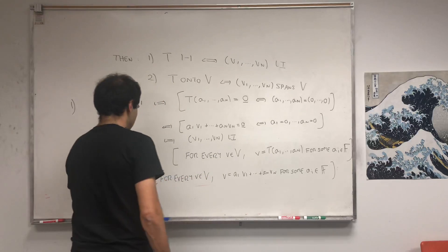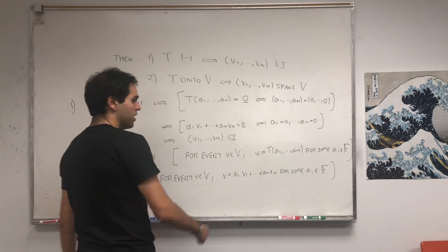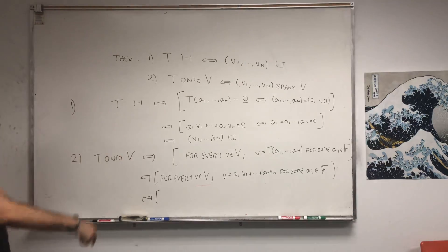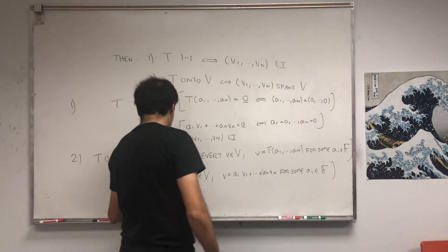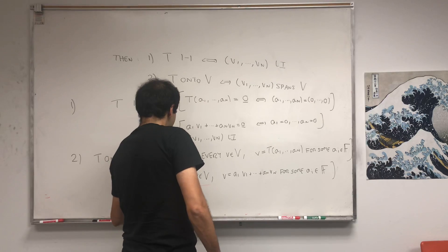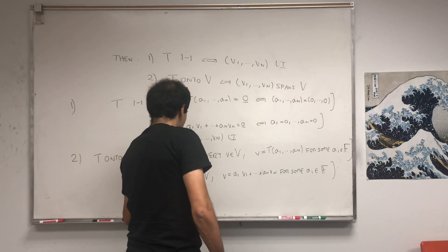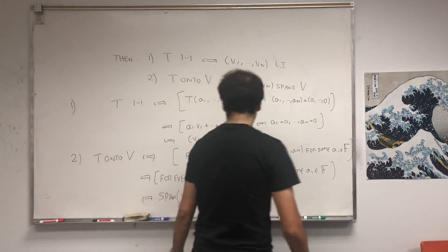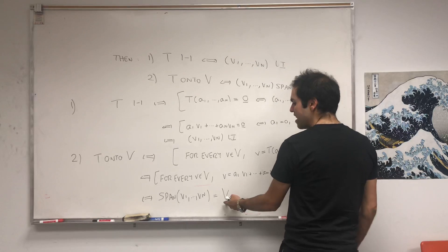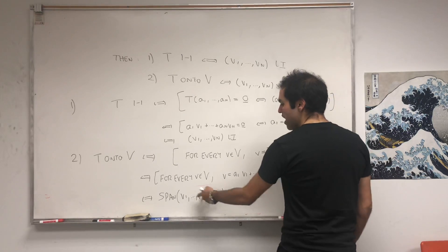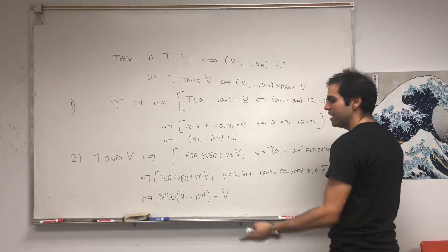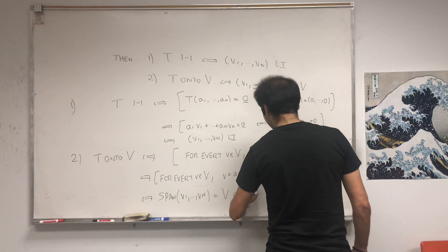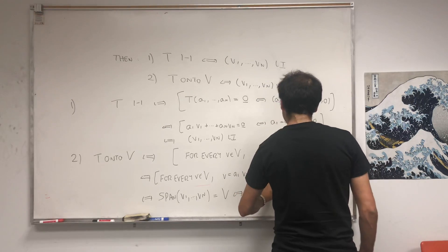And that's just the same thing as saying that the span of v1 up to vn equals v. Because it just says, given any vector here, you can find, write v as a linear combination of that list. And that's just the same thing as saying v1 up to vn spans v.